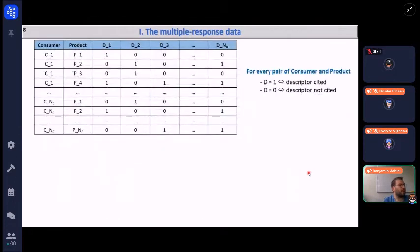Here are how the data could be summarized. Each line corresponds to a consumer and a product, so this is the evaluation of one product by one consumer and then you have on the right the indicator matrix which indicates whether the descriptor was cited for the corresponding evaluation with a 1 or 0 if the descriptor was not cited.